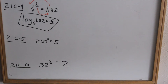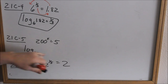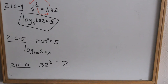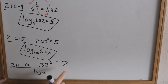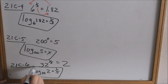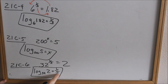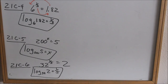Let's look at 21c5. This is in exponential form and we want to put it in log form. This is your base, this is your exponent. Log base 200 of 5 is equal to x. They're not asking us to solve for x — just to put it in log form. Looking at 21c6: 32 to the one-fifth. 32 is my base, so log base 32 of 2 is equal to the exponent, one-fifth. You can always go back and check: 32 to the one-fifth equals 2, which means the fifth root of 32 is 2. That is a true statement.